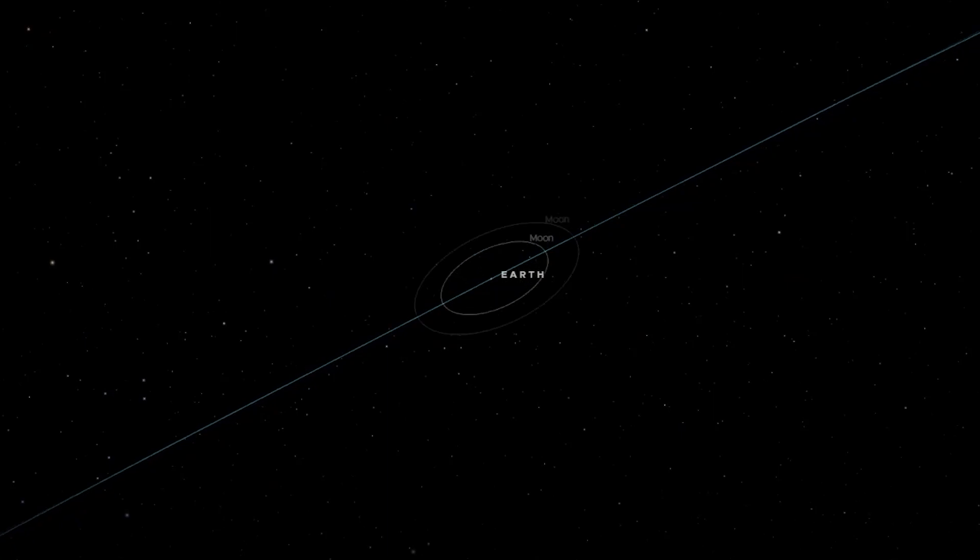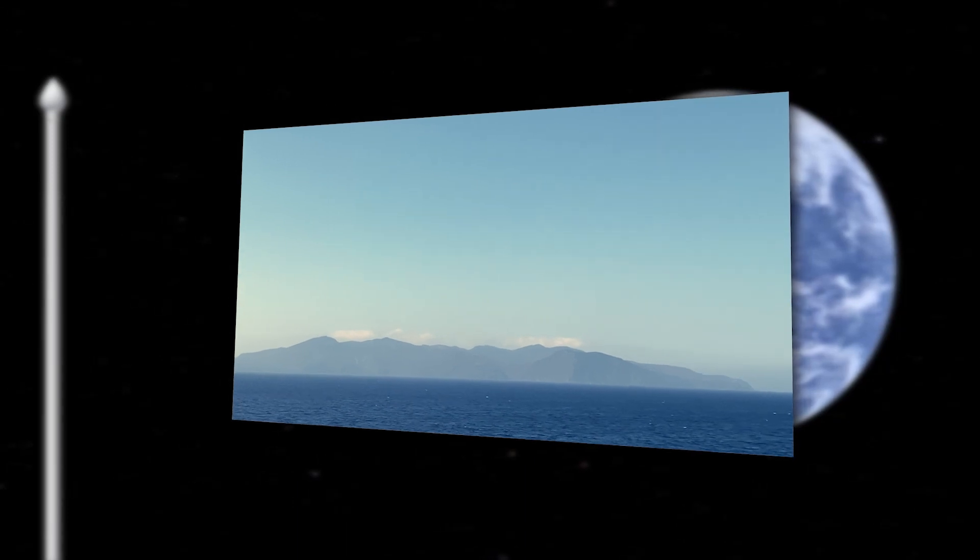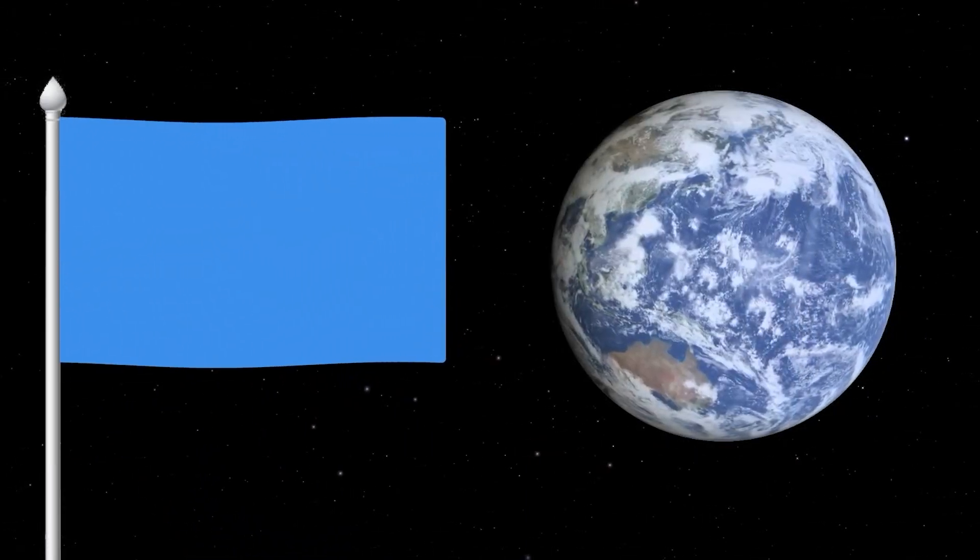And naturally the first one will be our home planet, namely the Earth. Did you know that 70% of the Earth's surface is water? So let's make the background of our flag bluish.